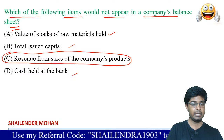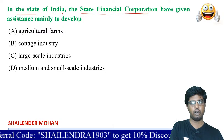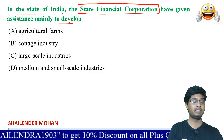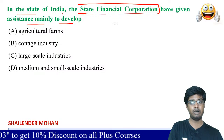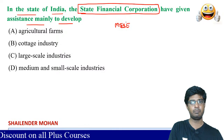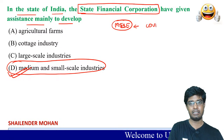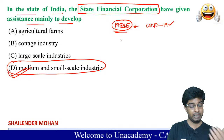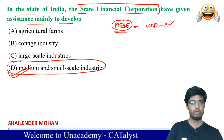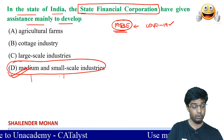In India, the state finance corporation has given assistance mainly to develop medium and small-scale enterprises (MSME). The answer is D option. Note that during COVID, the Government of India has given a lot of grants and monetary sanctions to MSMEs. State financial corporations maintain and support medium and small-scale industries.